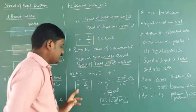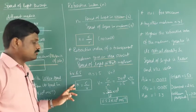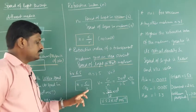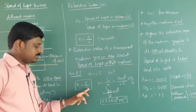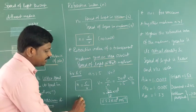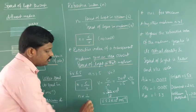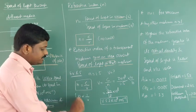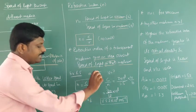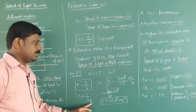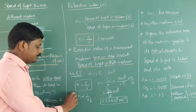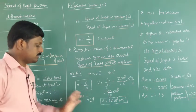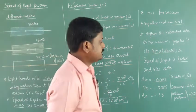So the relationship is: higher the refractive index of a medium, greater the optical density, and lesser the speed of light in that medium — and vice versa. If the refractive index is less, the velocity of light in that medium is more.